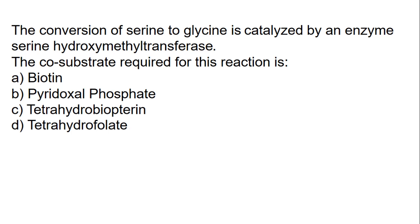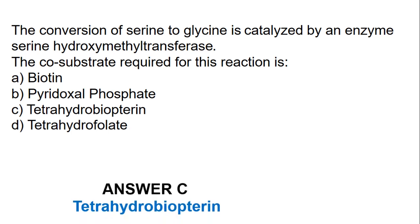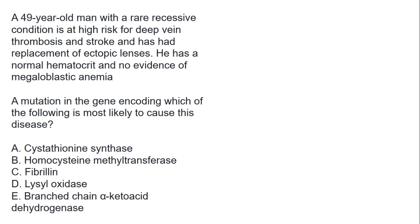The next question: the conversion of serine to glycine is catalyzed by the enzyme serine hydroxymethyltransferase. The cosubstrate required for this reaction is which of the following? Looking at the options, the best answer is C, which is tetrahydrobiopterin.